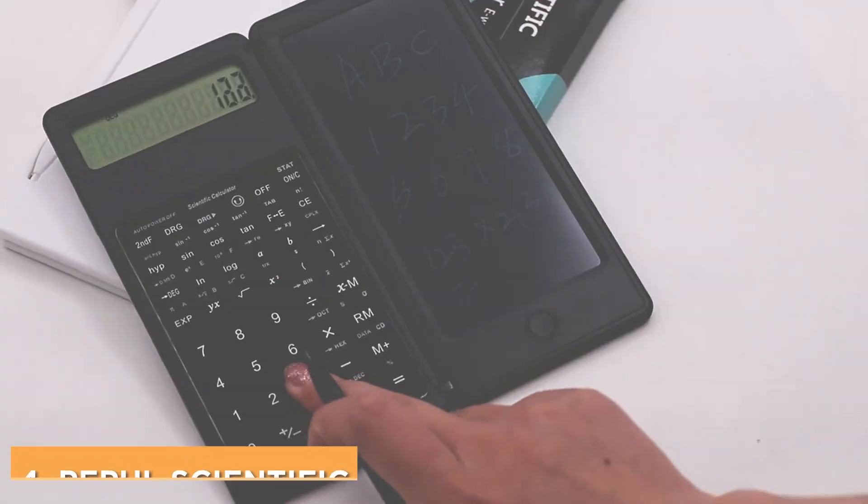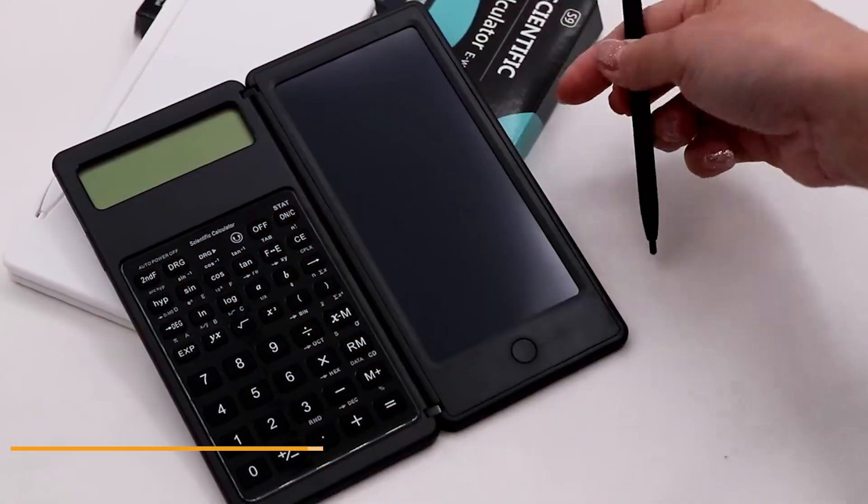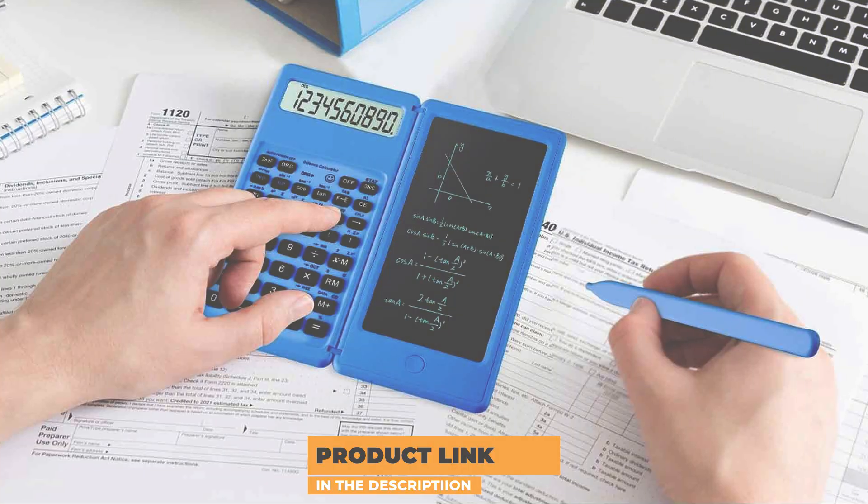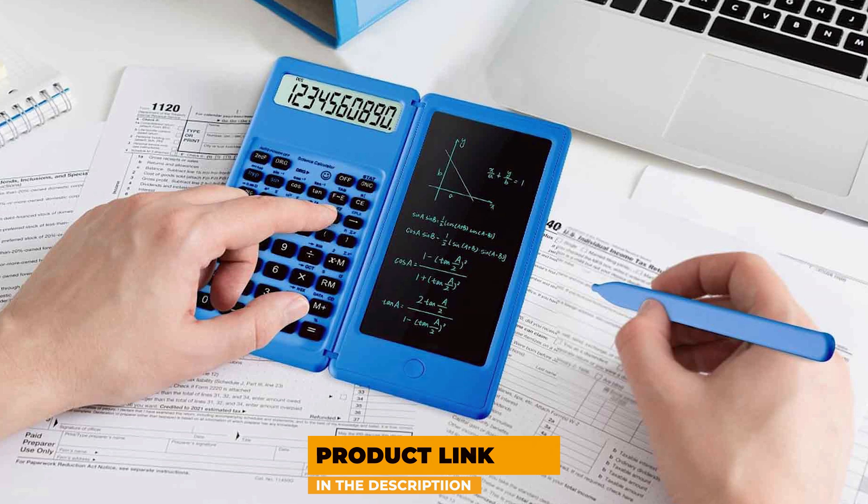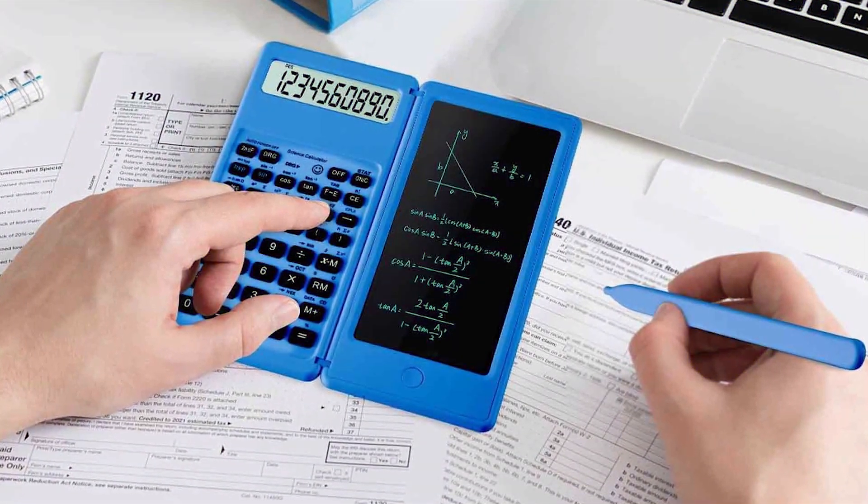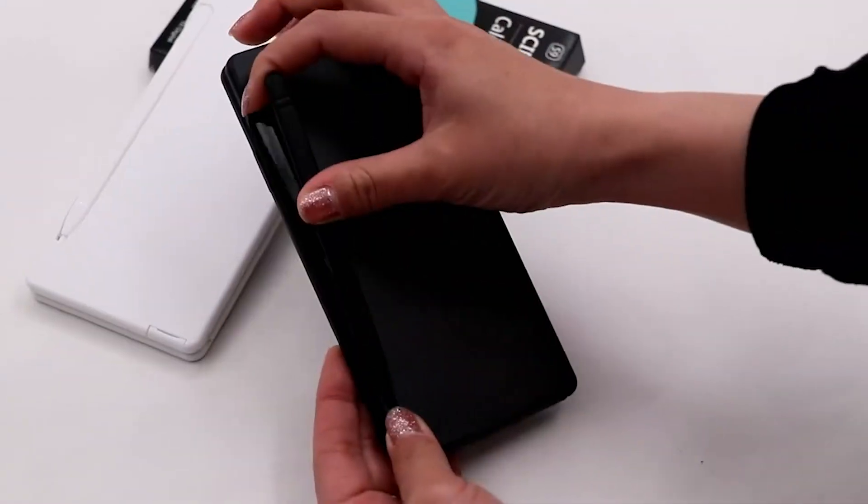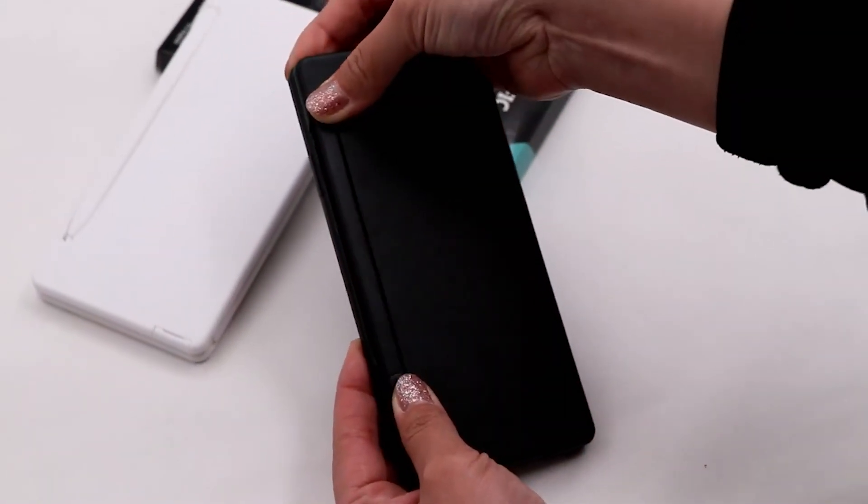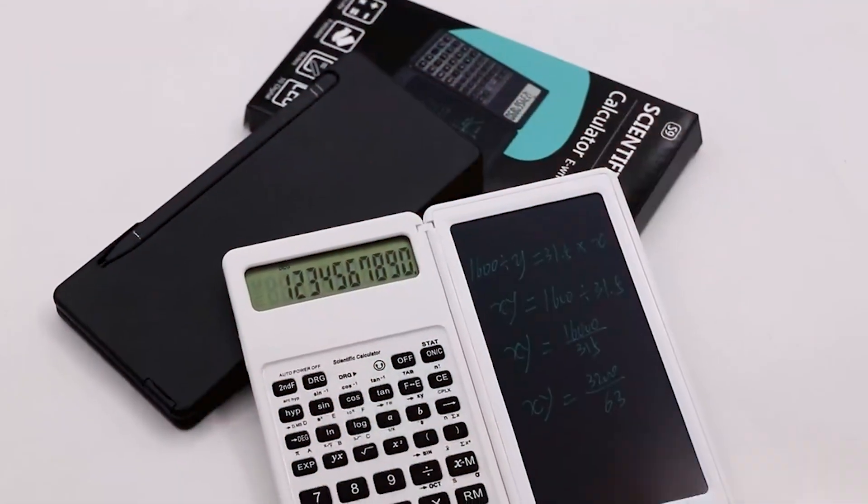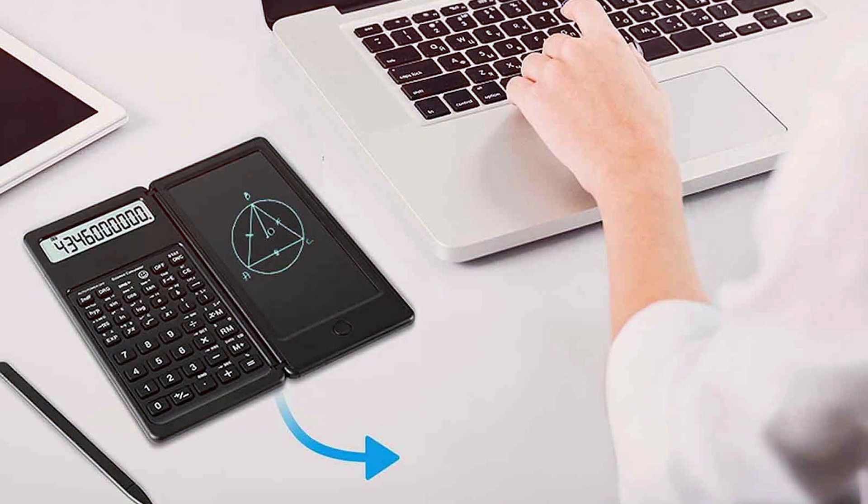Number four: PEPL Scientific Calculator with Notepad 10-Digit Large Screen. If you're looking for a scientific calculator that combines traditional functionality with modern features, the PEPL Scientific Calculator with Notepad is an excellent choice. This calculator boasts a large 10-digit display that is easy to read, making calculations straightforward and accessible.